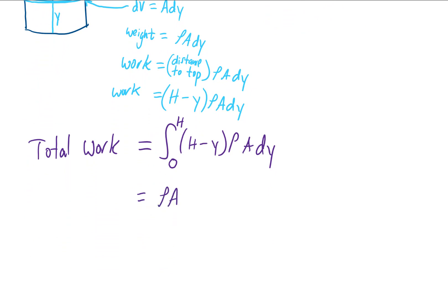So rho is a constant. A, the cross sectional area is a constant. So we can pull those out of the integral. And now we should hopefully have a pretty simple integral to complete.